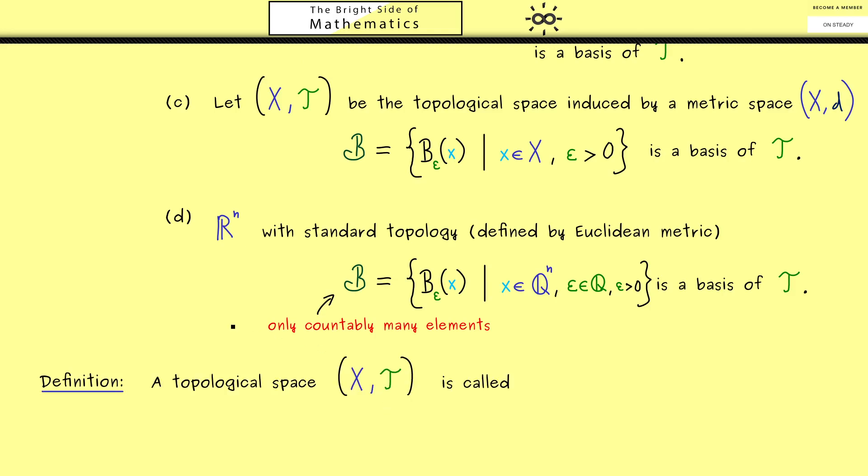There, the whole topological space with this nice property gets a new name. This is what I already told you in the introduction. The space is called second-countable, and we say this if there is a countable basis of the topology T. Hence, we can say R^n with the standard topology is second-countable.